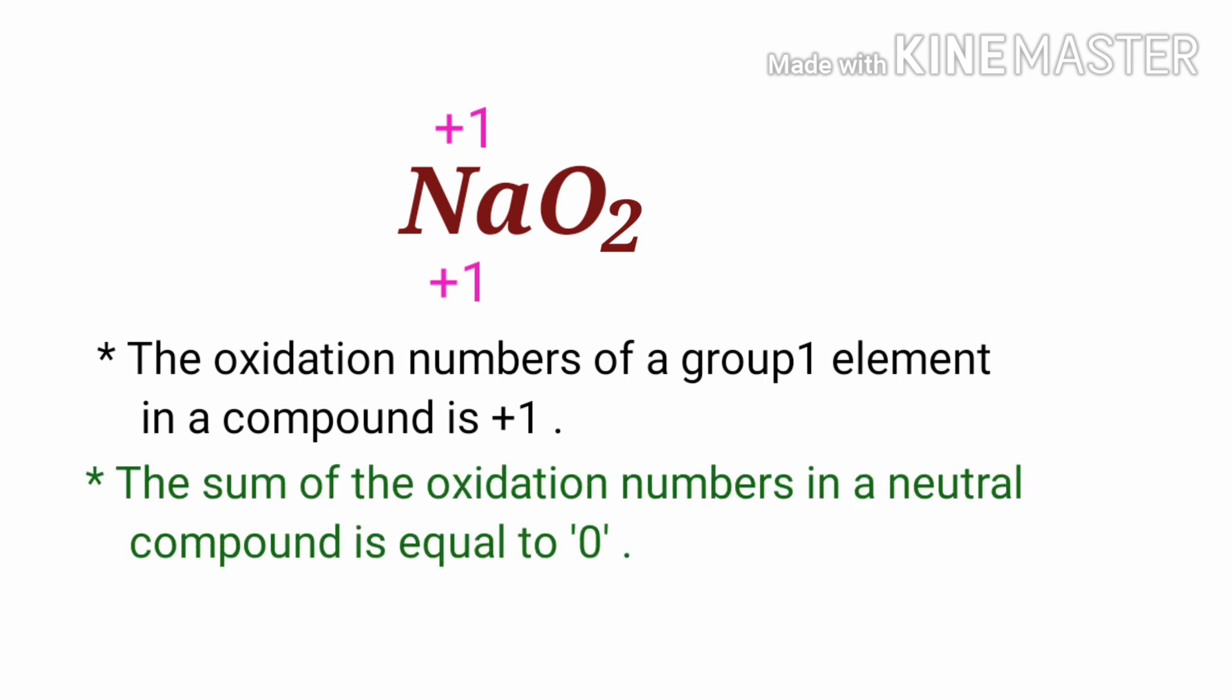As per rule, in a neutral compound, the sum of the oxidation numbers of the atoms is equal to zero. So, the numbers along the bottom must add up to zero. Therefore, the number under O₂ must be minus 1.